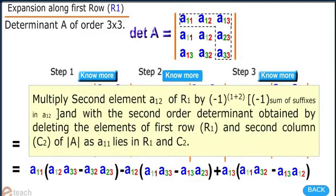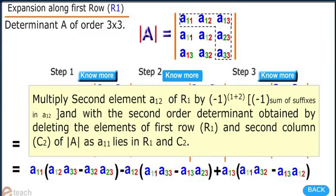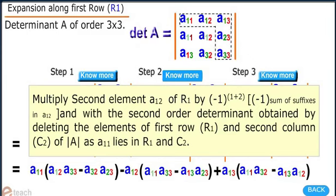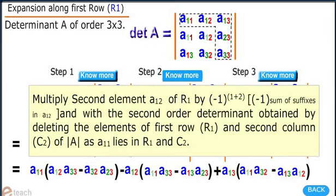Step 2: We multiply the second element A12 of row R1 by (-1)^(1+2), where the exponent is the sum of suffixes in A12, and multiply with the second-order determinant obtained by deleting the elements of first row R1 and second column C2, since A12 lies in R1 and C2.